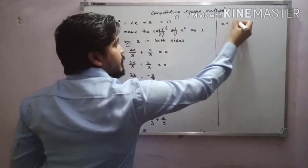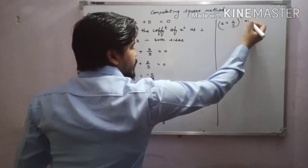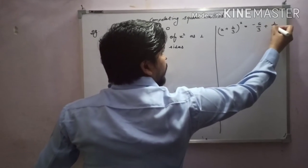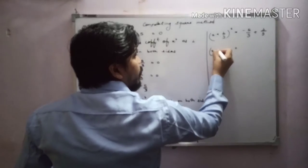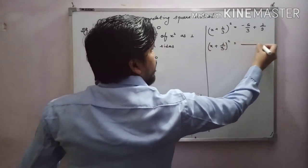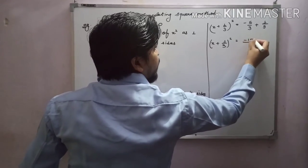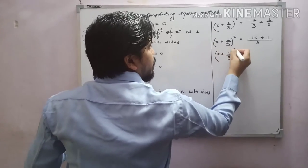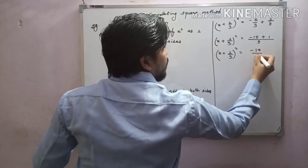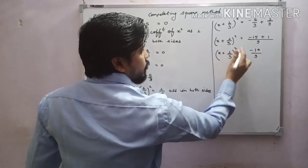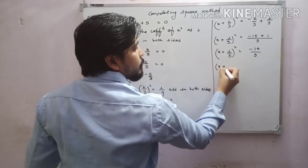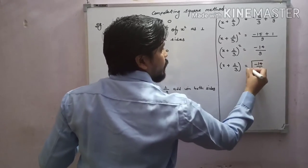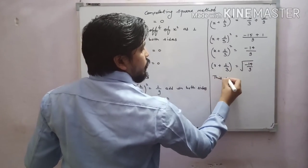Now we will solve the right-hand side. (x + 1/3)² = −5/3 + 1/9. Taking LCM as 9: −15/9 + 1/9 = −14/9. So (x + 1/3)² = −14/9. Taking the square root on both sides: x + 1/3 = √(−14/9).